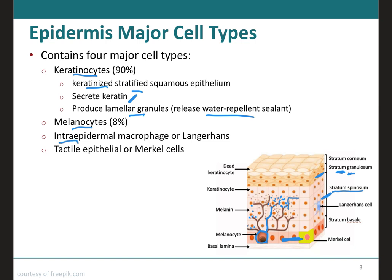Next we have the intraepidermal macrophages — intra means inside — also known as Langerhans cells. They arise from red bone marrow and then migrate to the epidermis, where they constitute a small fraction of the epidermal cells. Like melanocytes, Langerhans cells have long arm-like projections and situate themselves among surrounding keratinocytes. Because they are a type of macrophage, they are responsible for initiating the immune response mounted against microbes invading the skin. Just like melanocytes, intraepidermal macrophages are also easily damaged by UV light.